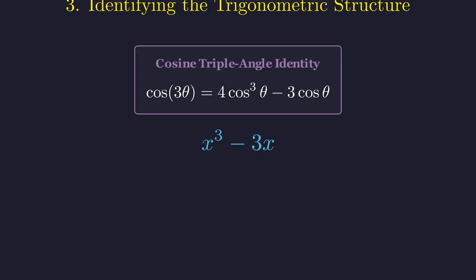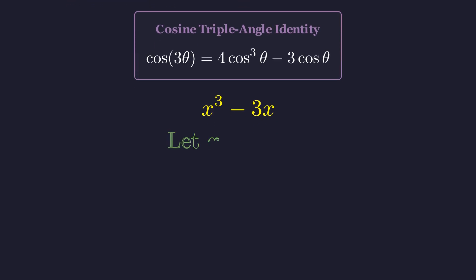The question is, what substitution makes this work? If we want x cubed minus 3x to match the cosine identity, we need to account for that coefficient of 4. The right substitution is x equals 2 cosine theta. So let's make the substitution x equals 2 cosine theta. This single move will unlock the entire problem.